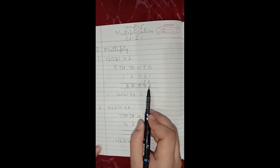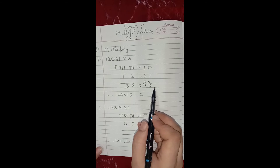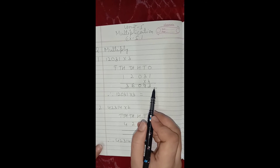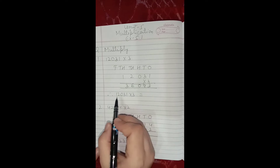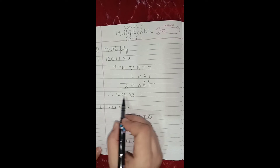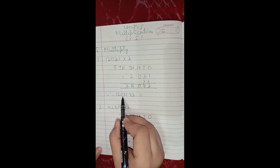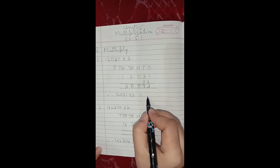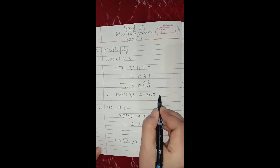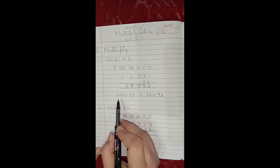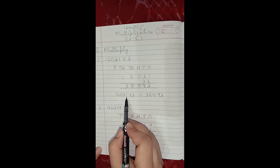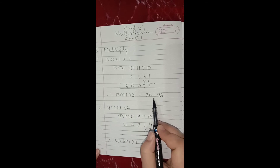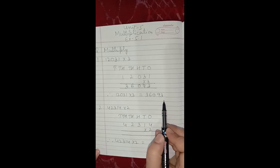The answer which we get after multiplication is known as the product. You should remember this. Therefore 12,031 multiply by 3 is equals to 36,093.